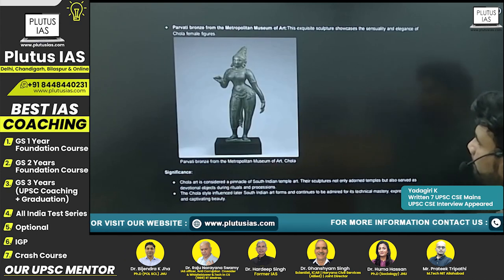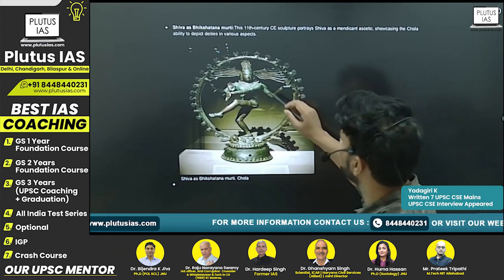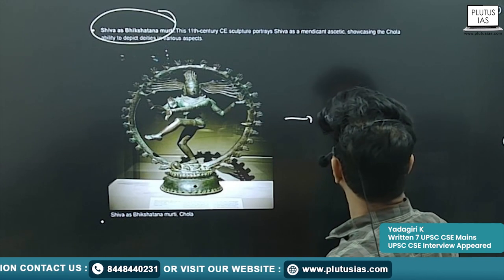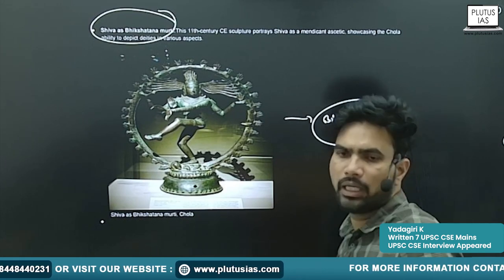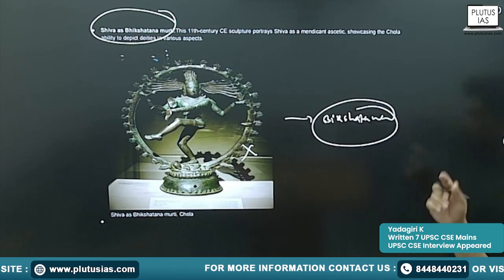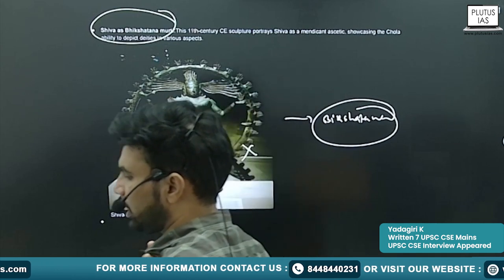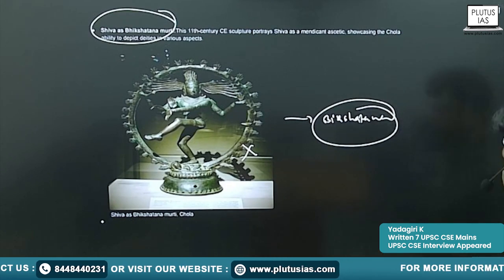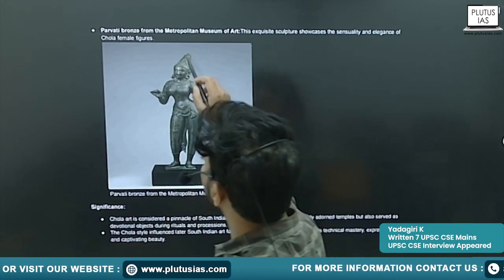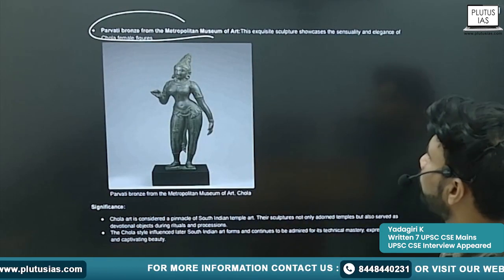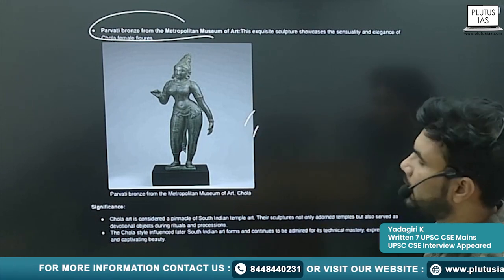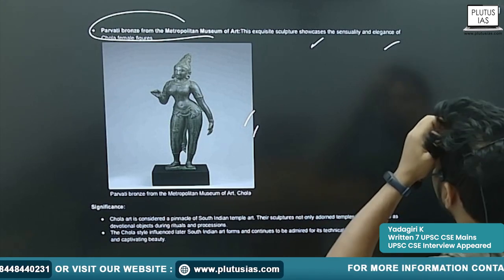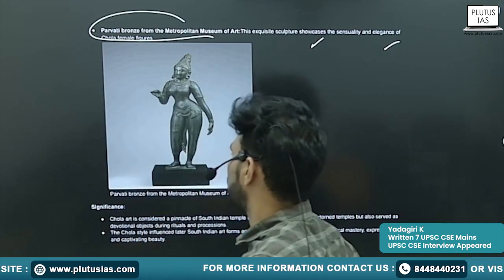Another image shows Shiva depicted as Bikshatana Murti — Shiva in the begging form. That is also a great image. Another image is Parvati bronze from the Metropolitan Museum of Art — an exquisite sculpture showcasing the sensuality and elegance of Chola female figures.